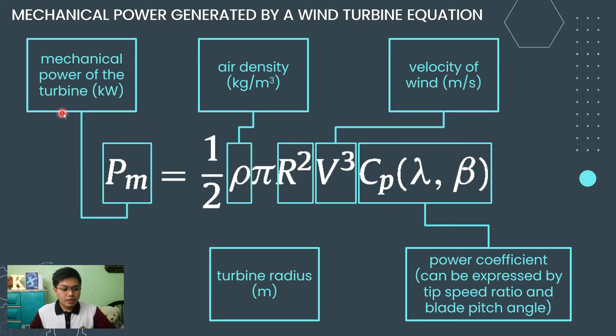The mechanical power generated by a wind turbine can be expressed as the mechanical power of the wind turbine in kilowatts, the air density in kilogram per cubic meter, the turbine radius in meters, the velocity of the wind in meters per second, and the power coefficient, which can be expressed by the tip speed ratio and the blade pitch angle.